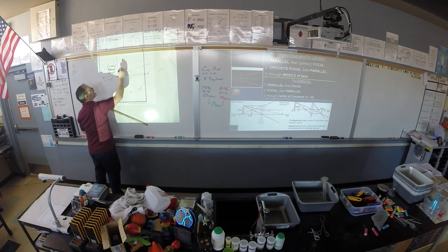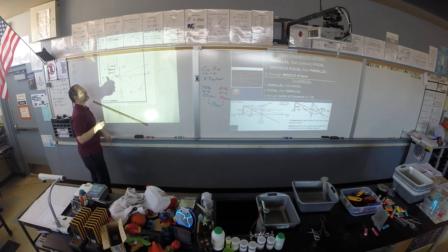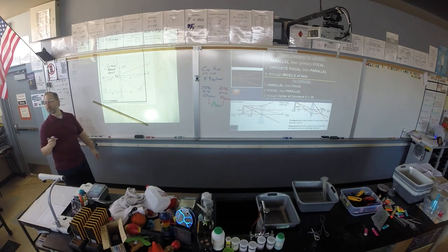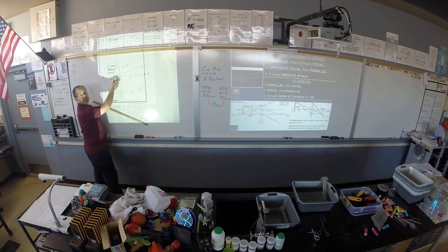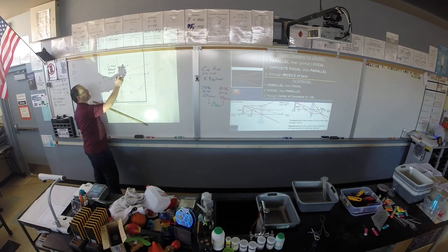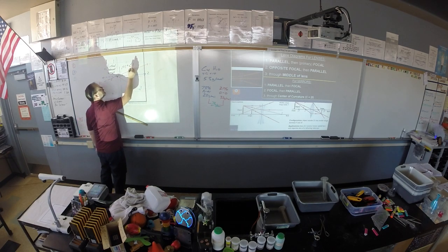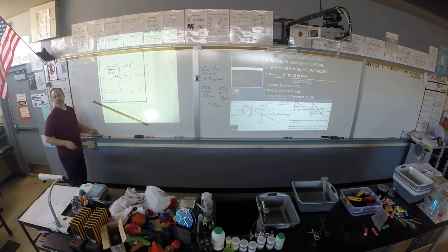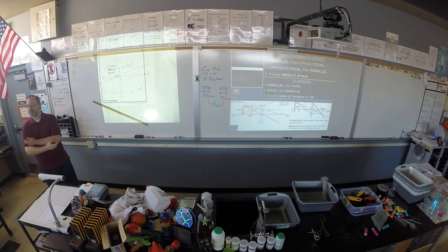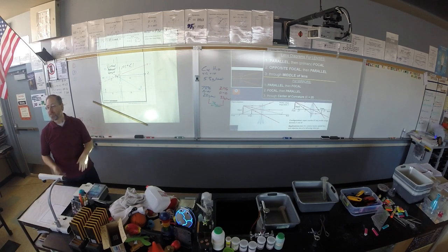So without even calculating it, what would you expect the m to be? Would it be positive or negative? Positive. You would expect the m to be positive because it made an upright image, and you would expect the m to be less than 1. Because it's reduced.